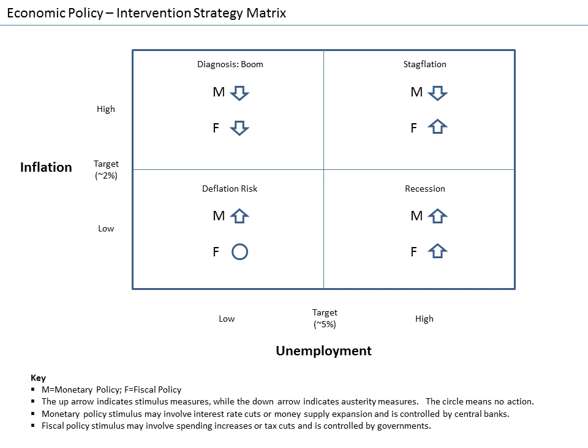Ludwig von Mises's work Theory of Money and Credit, published in 1912, was one of the first books from the Austrian school to deal with macroeconomic topics.